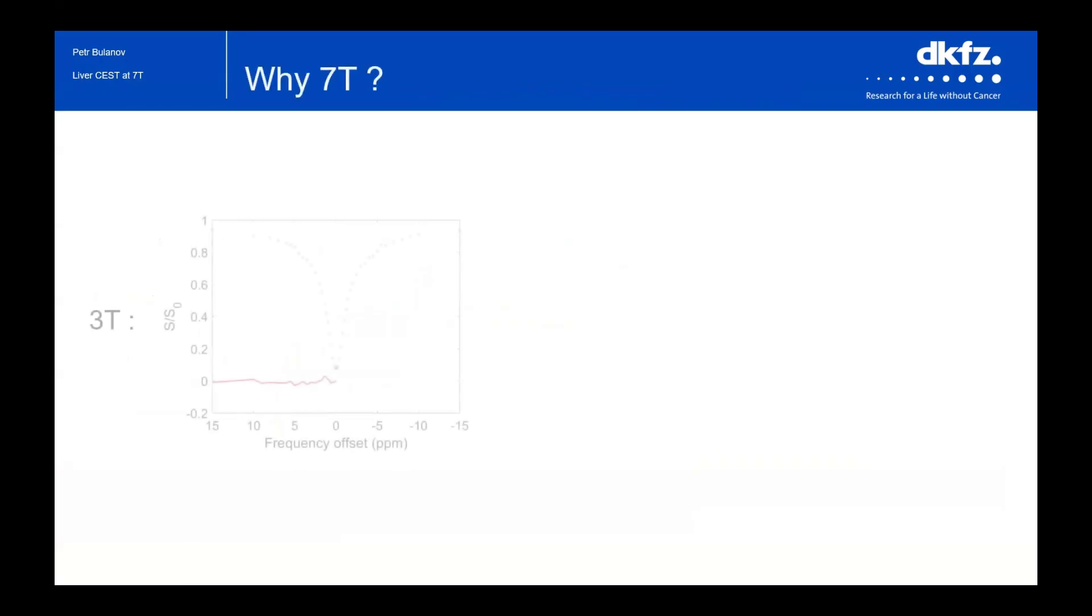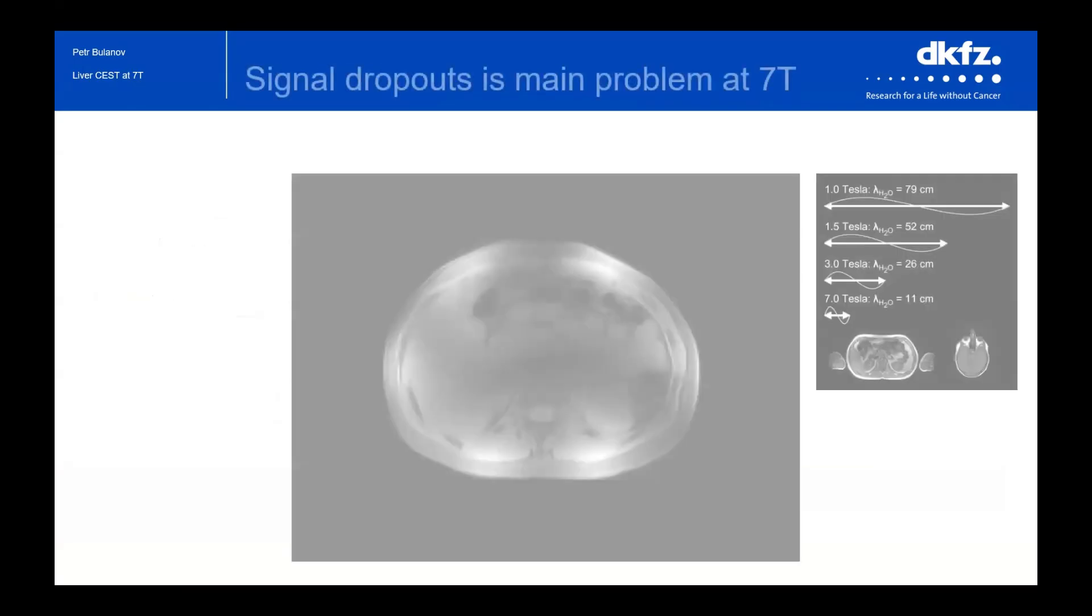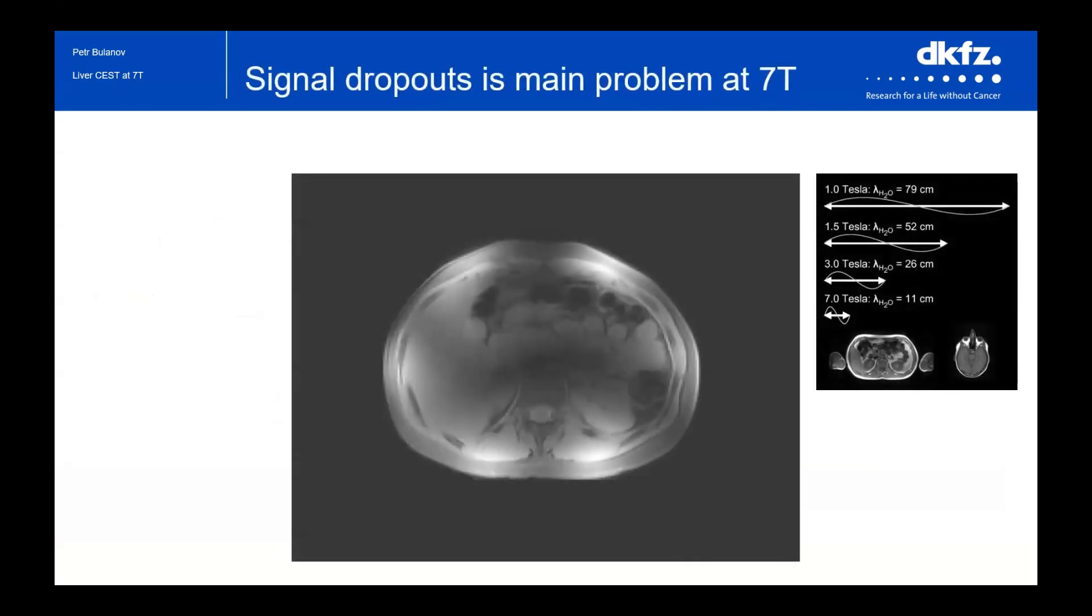But we can do it only if we have good resolution of the spectra, which can only be achieved on 7 Tesla. But on 7 Tesla, we have a significant problem of signal dropouts in the abdominal area.